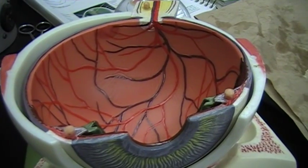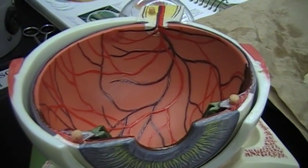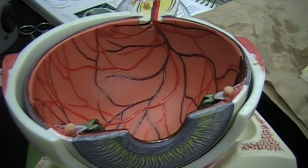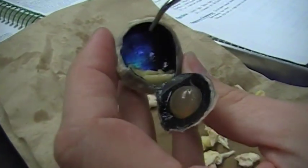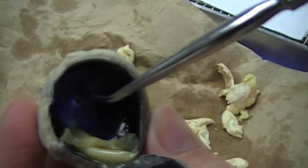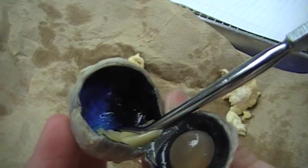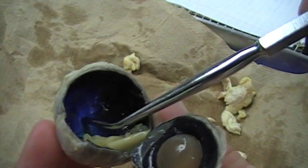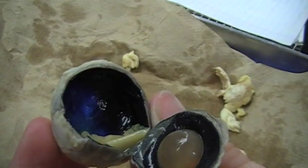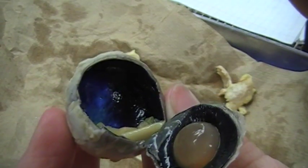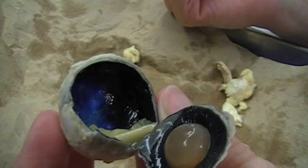And then next we have the tapetum fibrosum. And that is this bluish iridescent color, if you can see it. And it reflects light back through the retina. And it is thought to aid in the night vision of some animals.